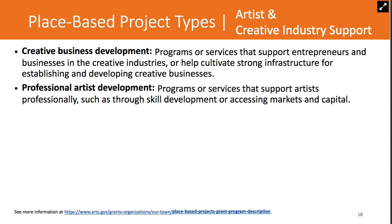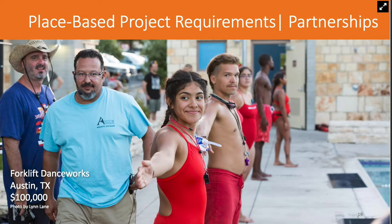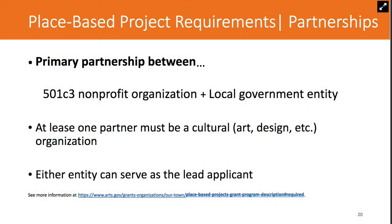Partnerships are really crucial for successful creative placemaking, and they're also a core requirement of the Our Town program. These applications must come from a partnership that includes two primary partners: a 501(c)(3) nonprofit organization and a local government entity. One of these two partners must have a mission dedicated to arts, culture, or design. Either type of organization can serve as the lead applicant.